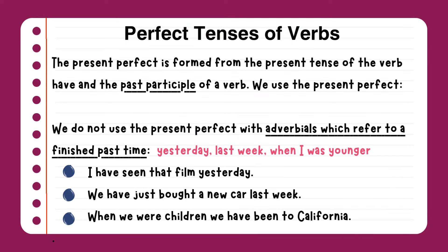We do not use the present perfect with adverbials which refer to a finished past time. Signal words are: yesterday, last week, when I was younger. Examples: I have seen that film yesterday. We have just bought a new car last week. When we were children, we have been to California.